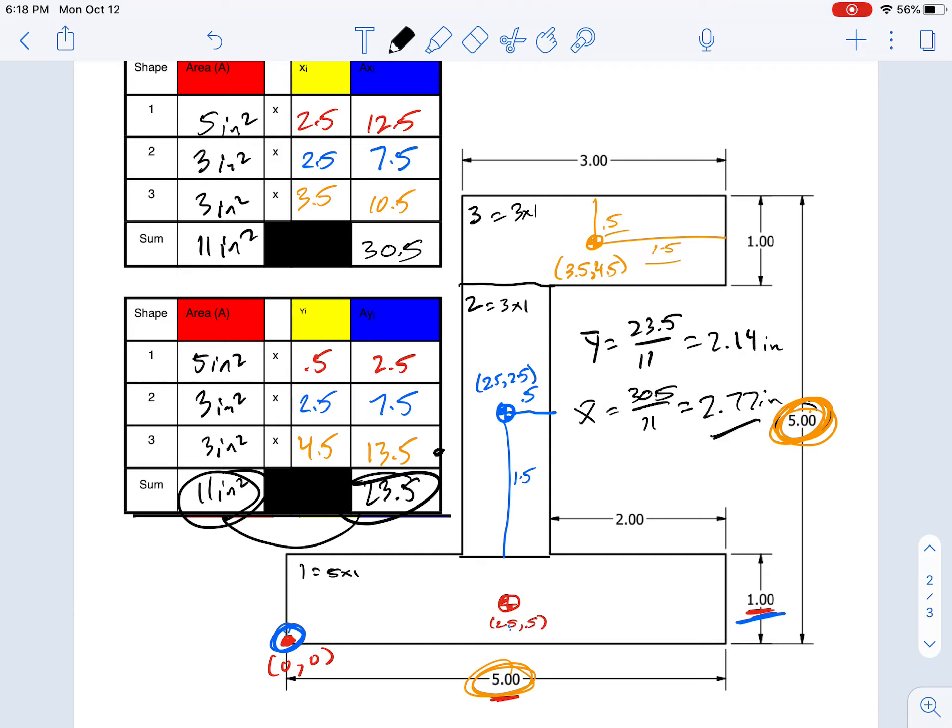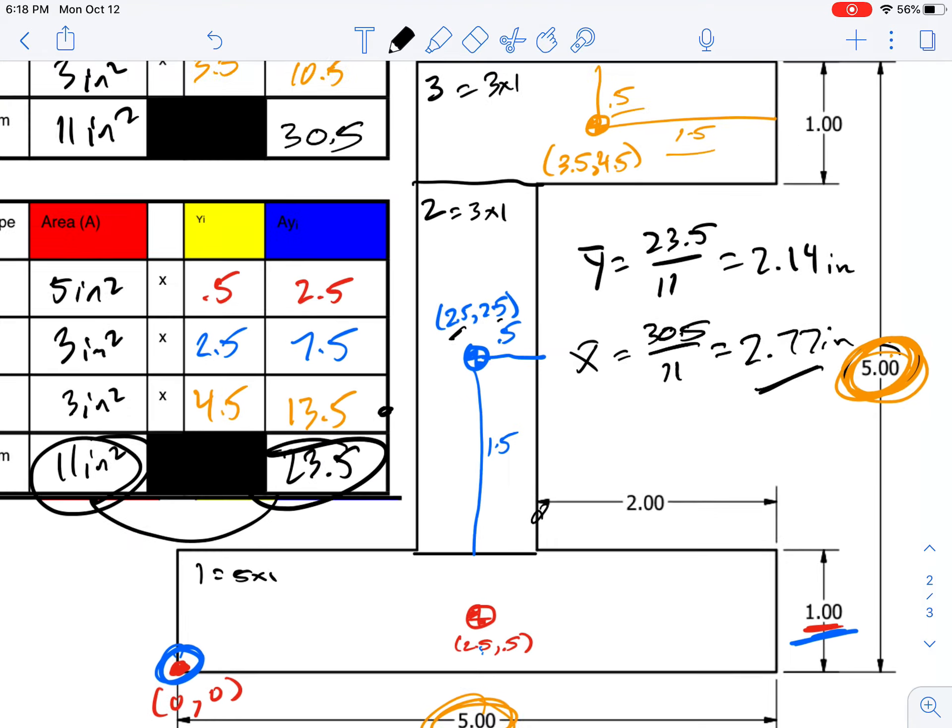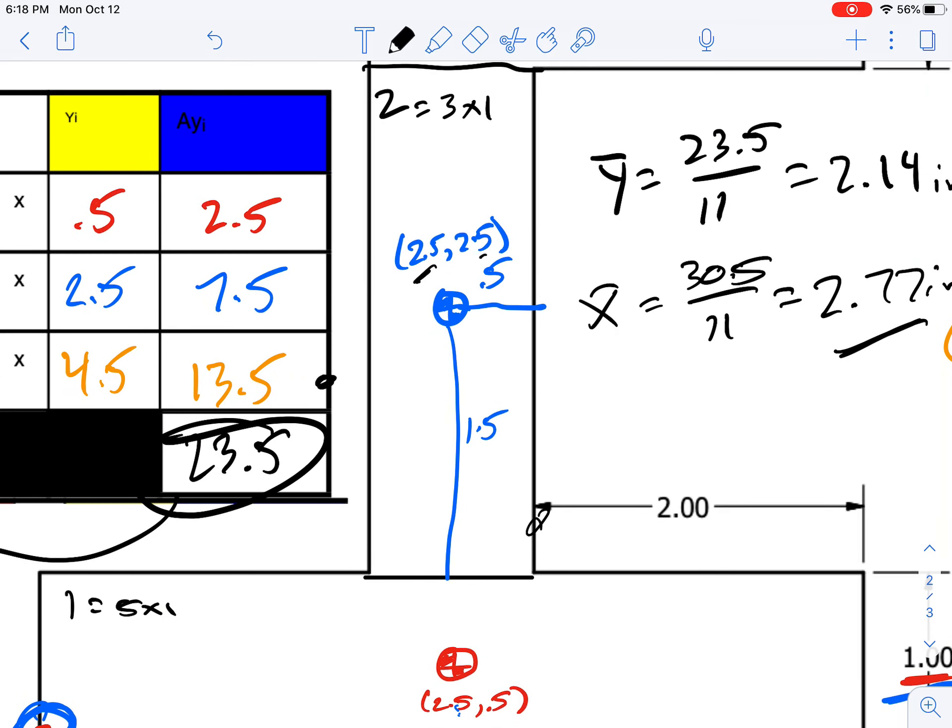So where is 2.77 on our graph? It's between 2.5 and 3, so it's in here somewhere. And then 2.14 is lower than this. So our centroid location is right about here. This is the final answer at (2.77, 2.14).